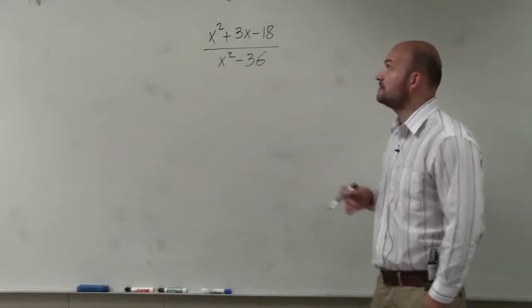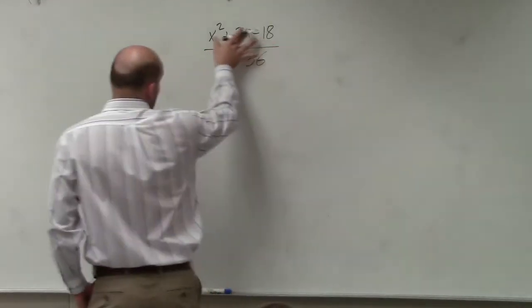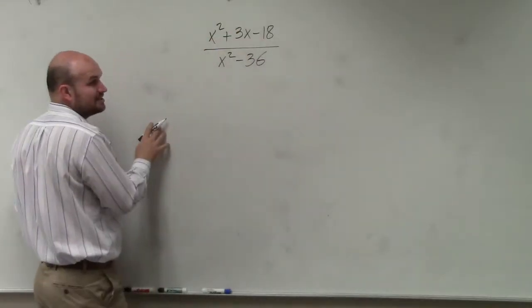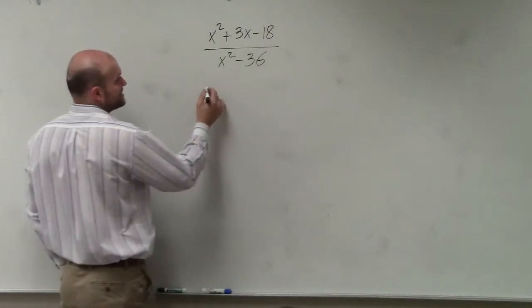So if you guys take a look at this, I have x squared plus 3x minus 18. We need to go ahead and factor. So again, this is a trinomial where a is equal to 1. So I basically need to find what two numbers multiply to give you negative 18 and add to give you 3, positive 3.